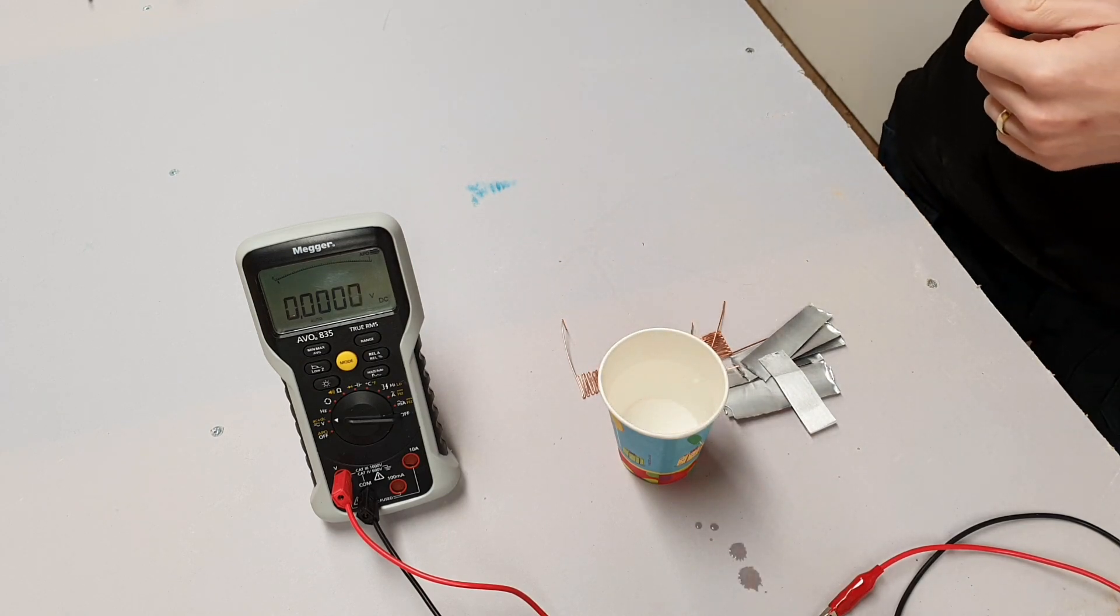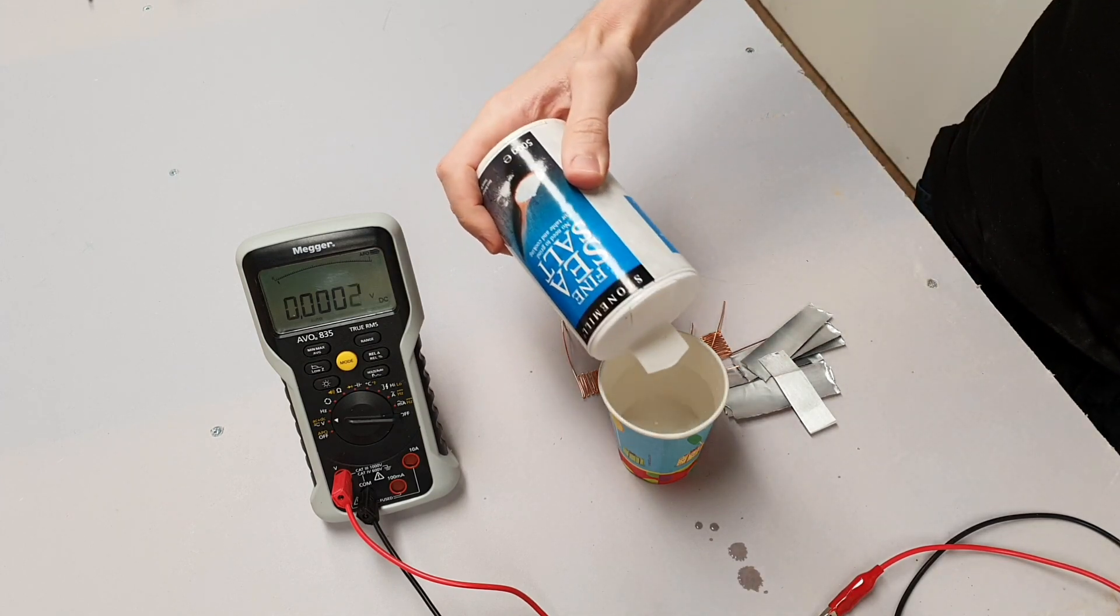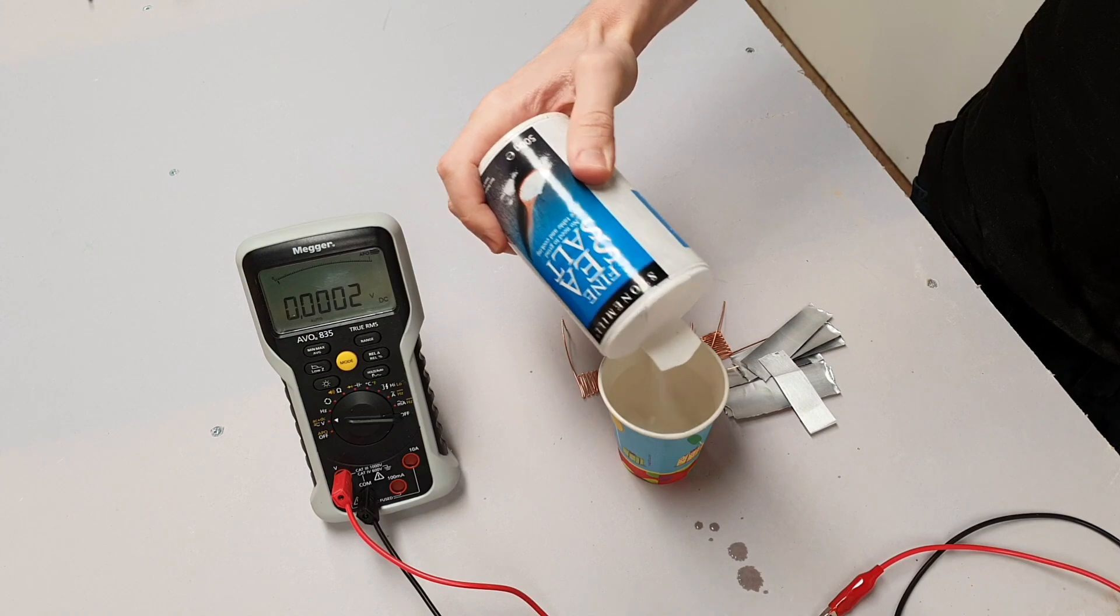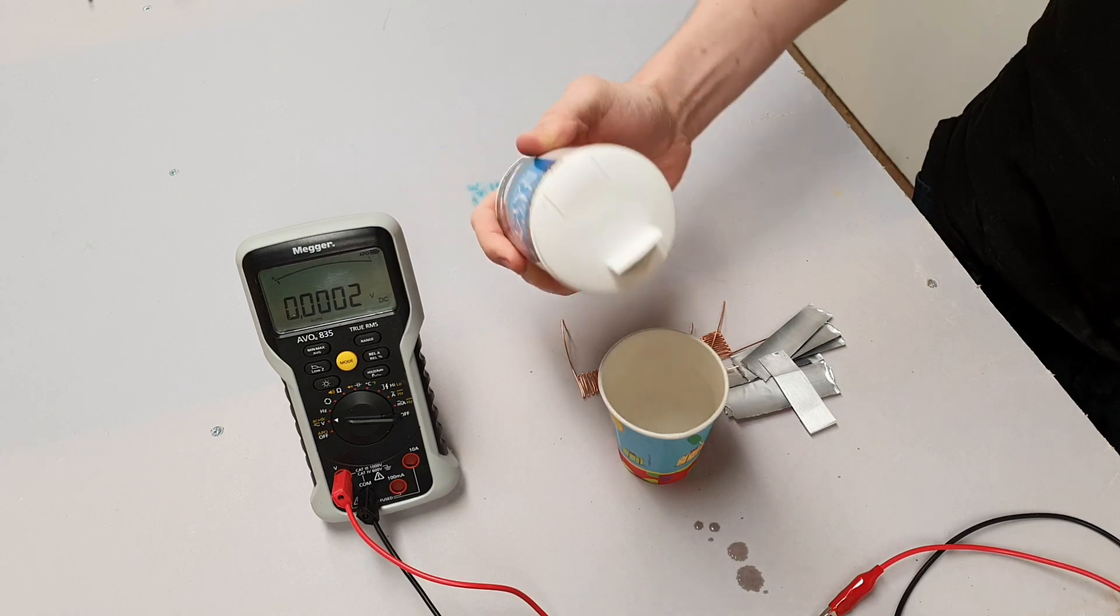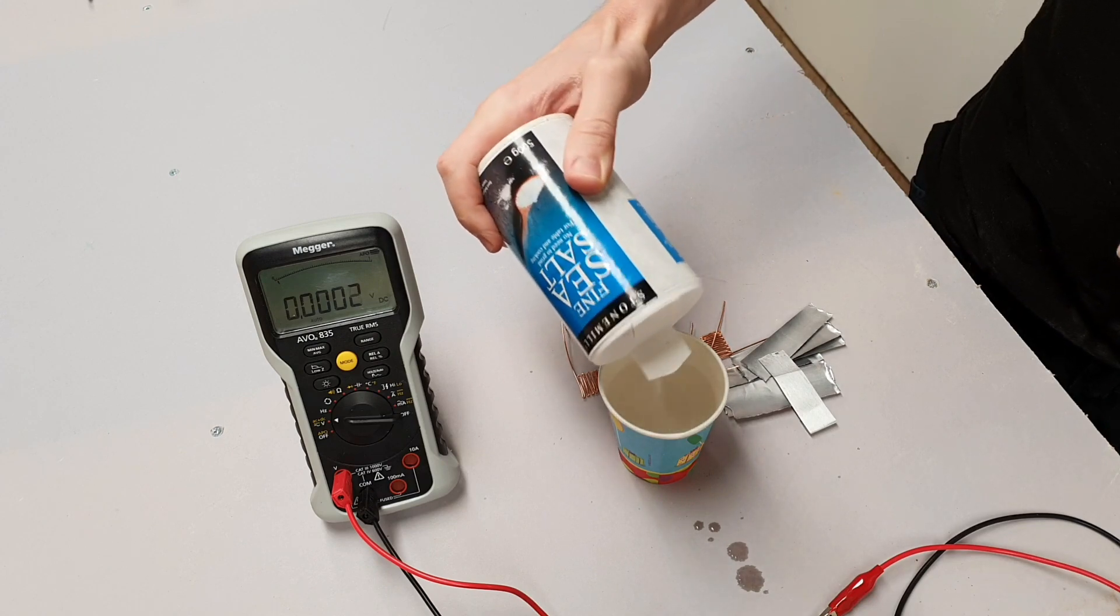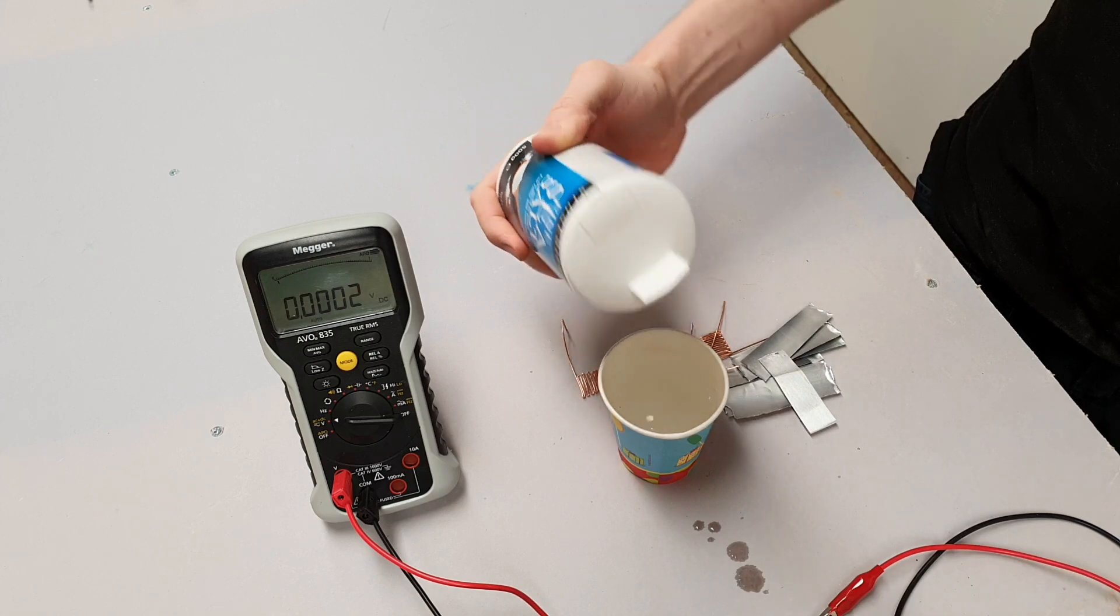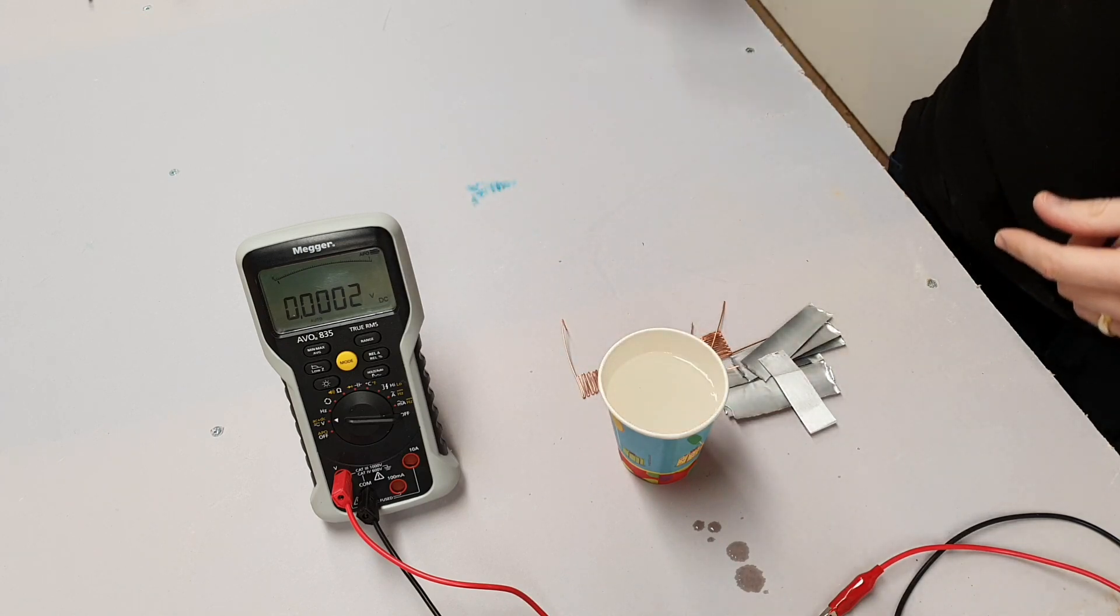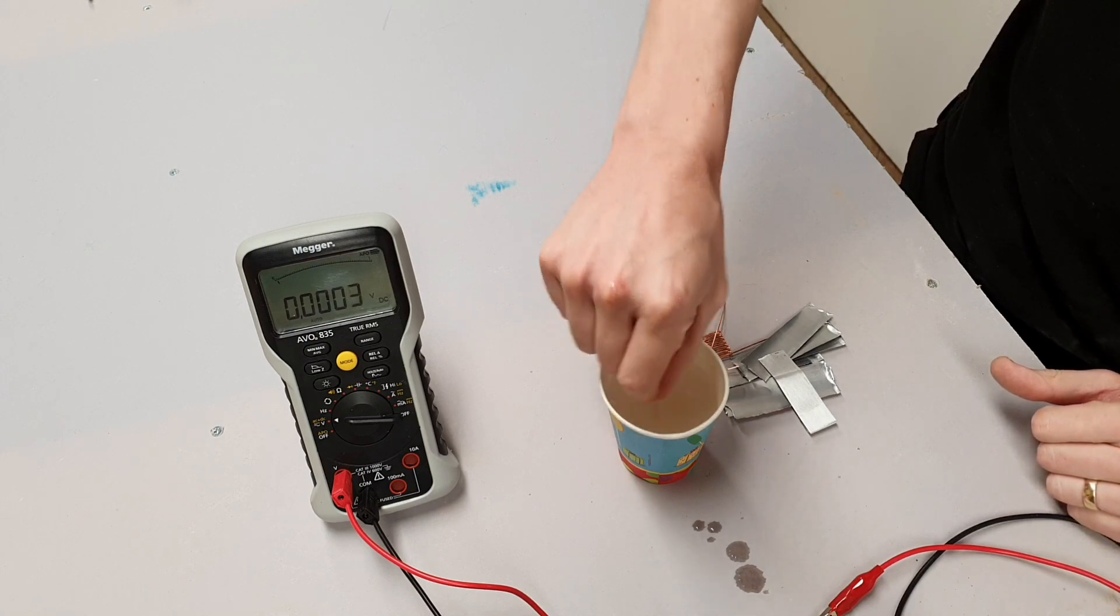Then we're going to add into that just some normal salt. We've just got some sea salt here that we're going to fling in, about a tablespoon. And then we'll just give that a good stir with one of these little pieces of copper.